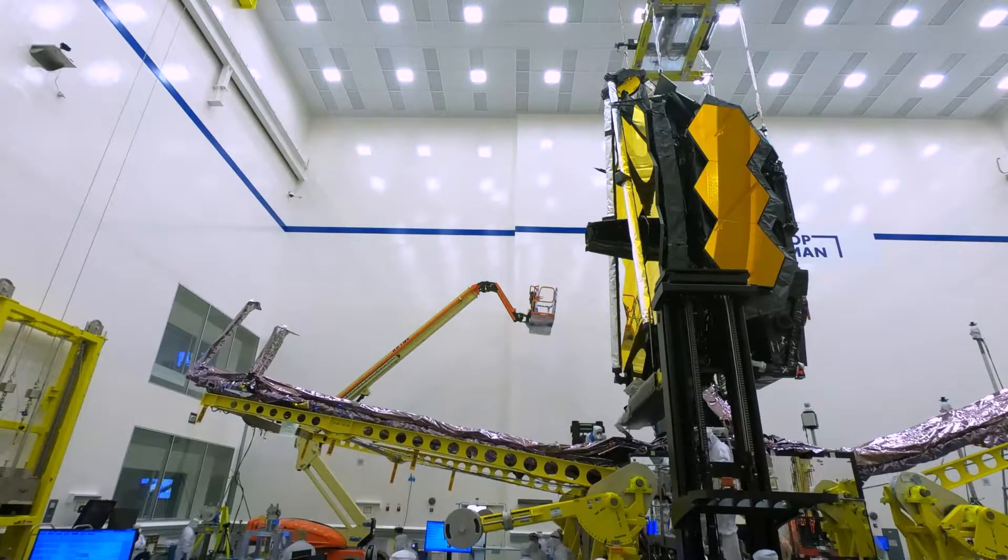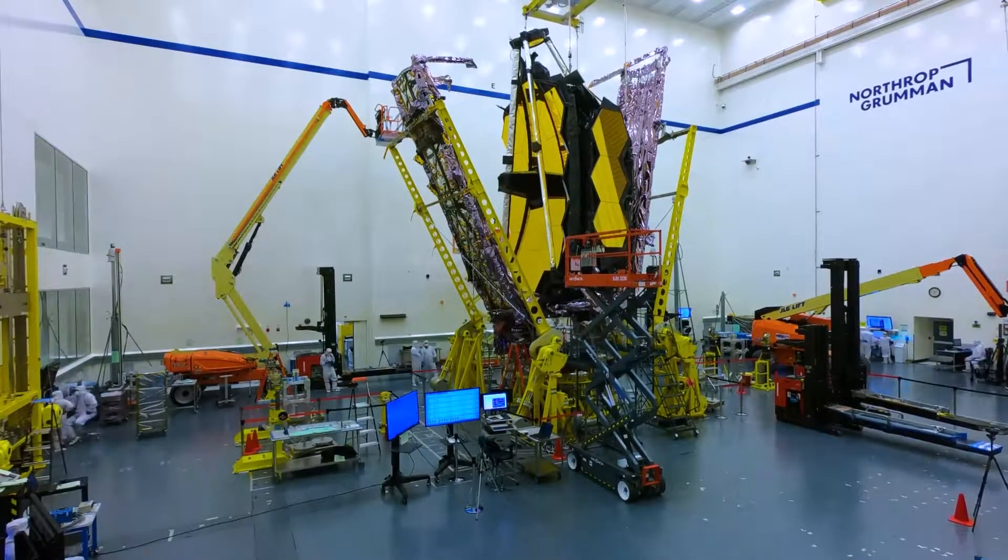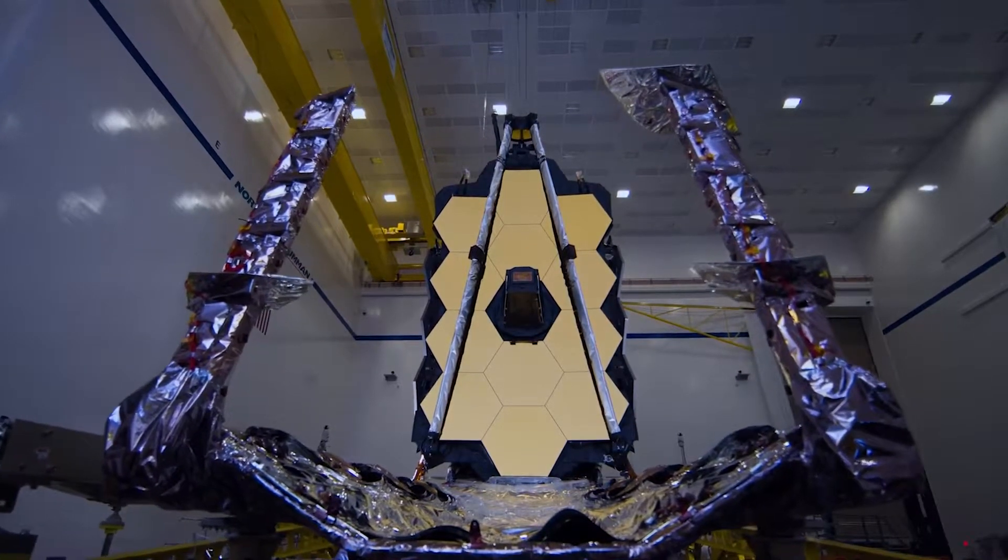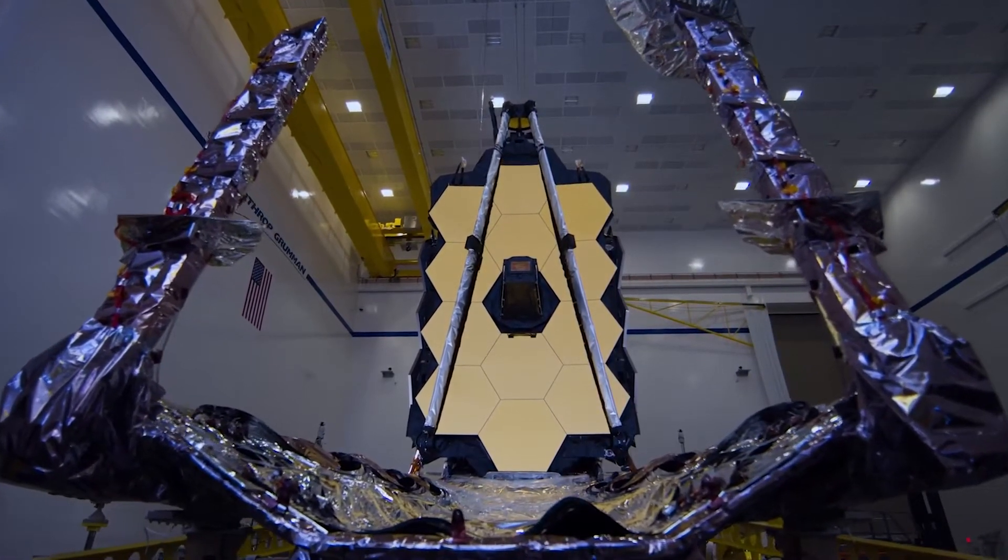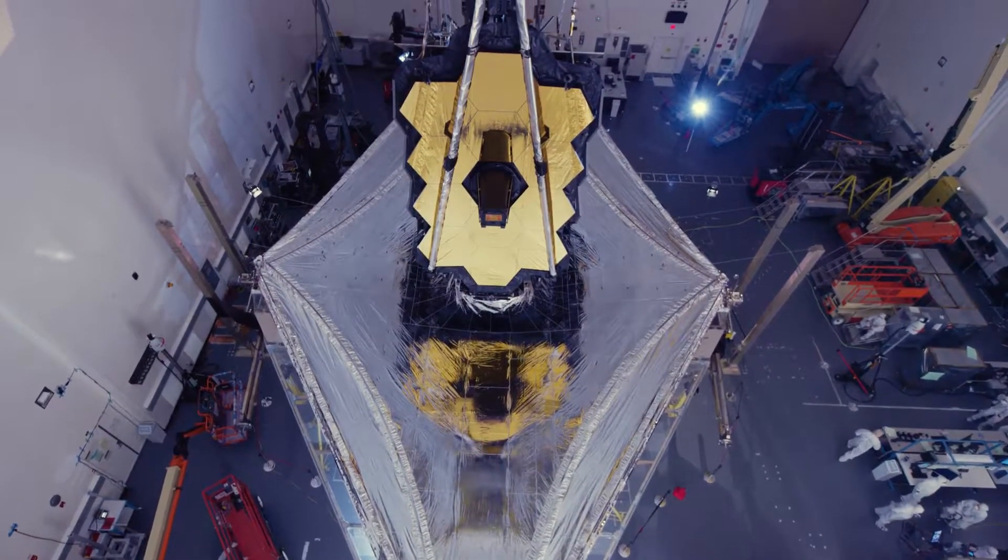So big, it had to be folded up like origami to fit onto the rocket that carried it into space. So precise and sensitive, it has to be kept at temperatures not much warmer than absolute zero to prevent its own internal heat radiation from getting in the way of its sensors.